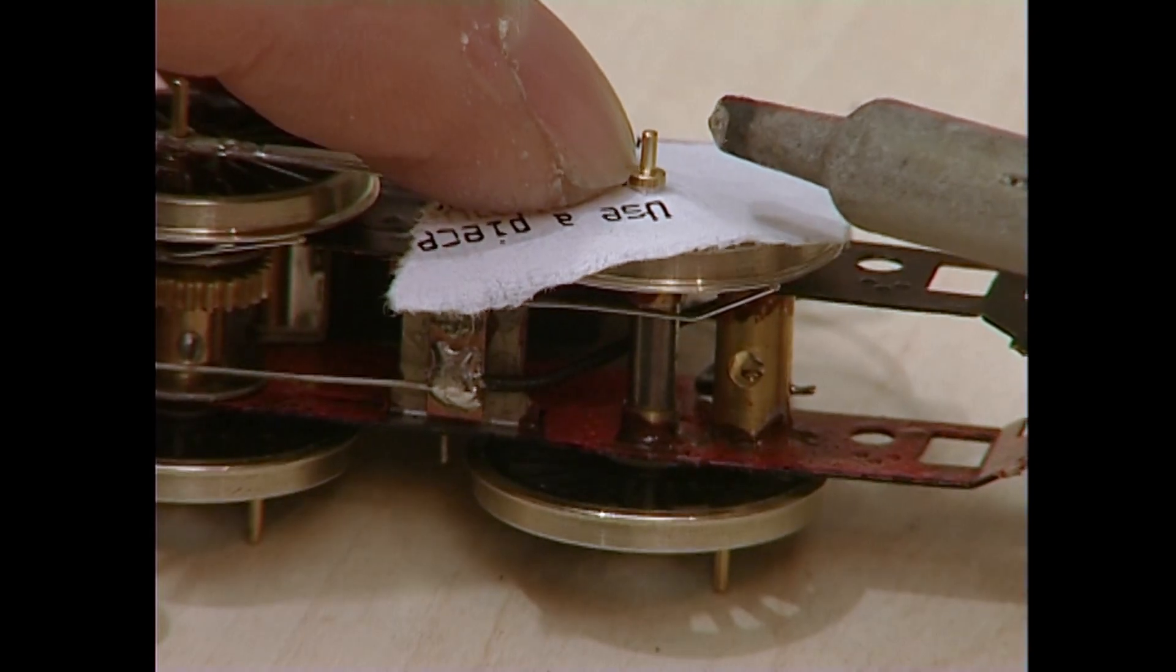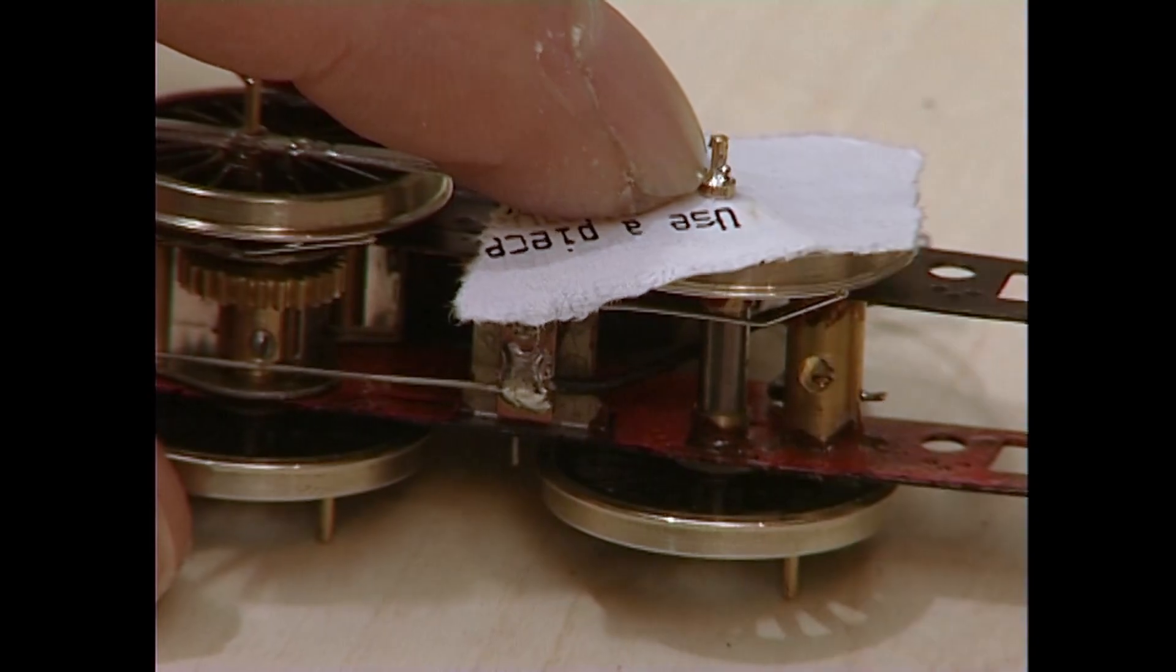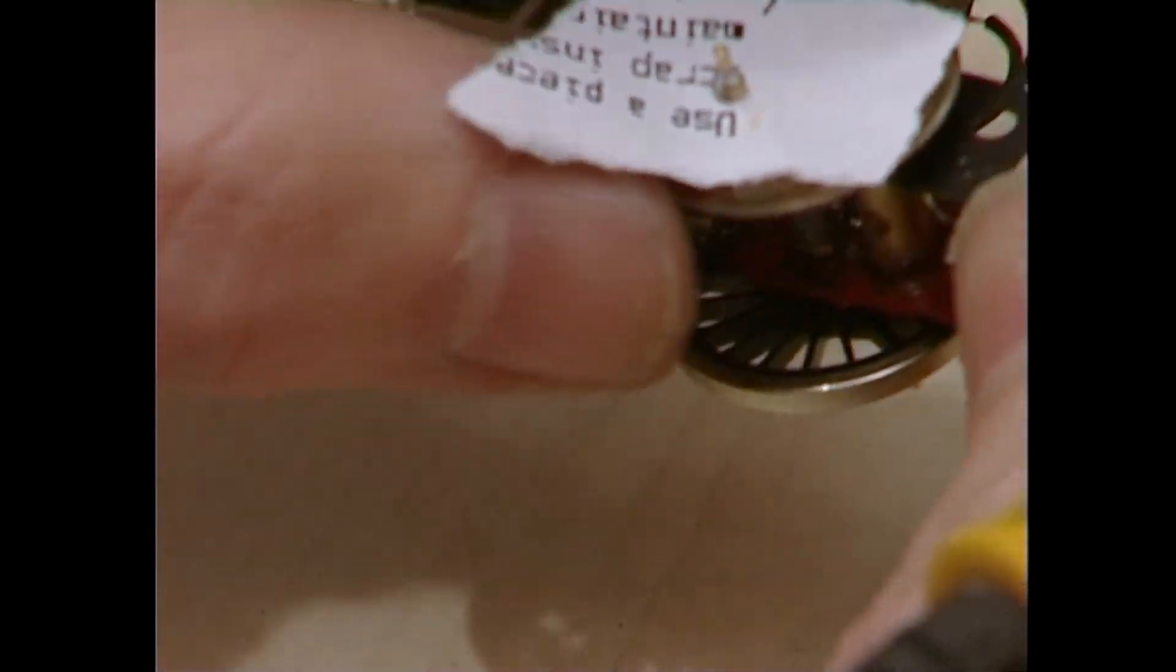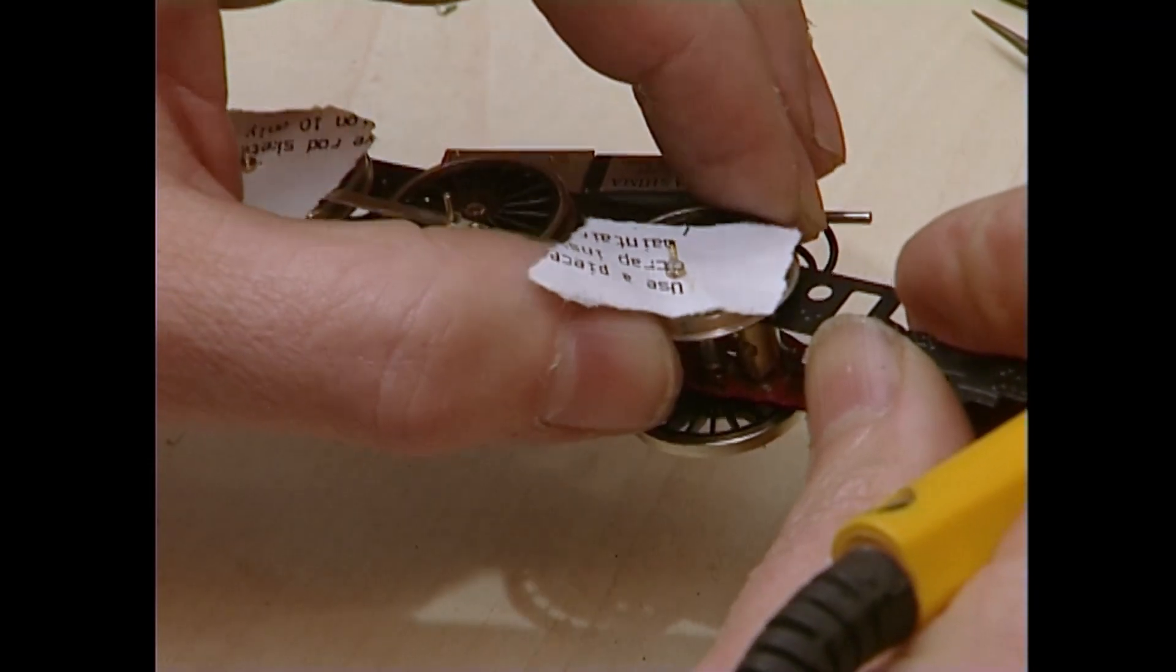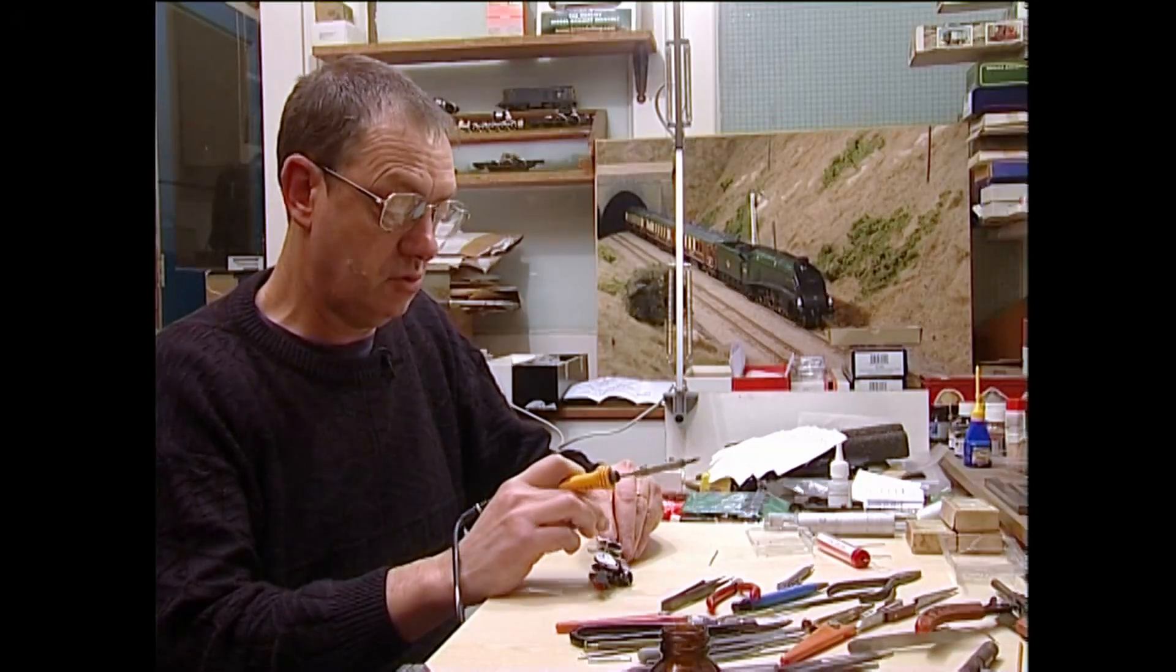Just to make sure that you don't gum everything up solid with solder, I'm just using paper scrap washers or spacers. This will prevent the solder running through and solidifying everything. And also give me a working clearance. The Romford crank pin sets come with these little washers.